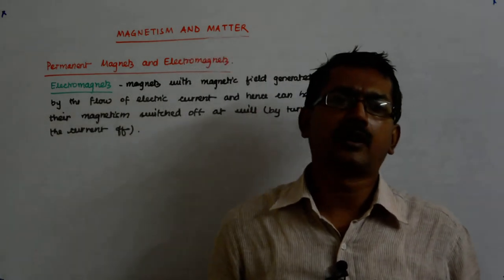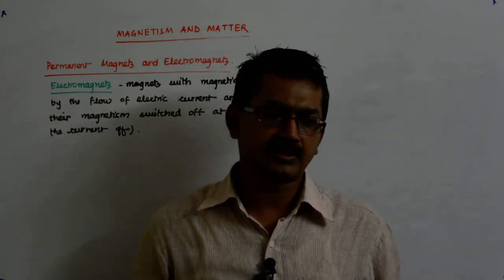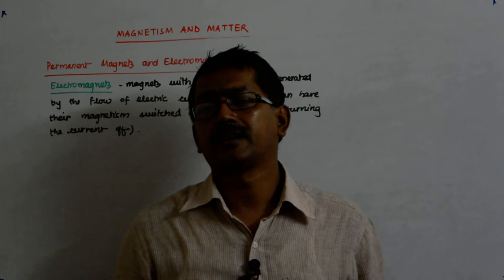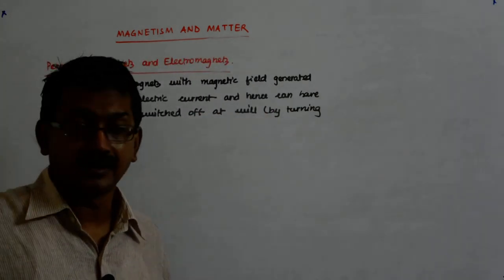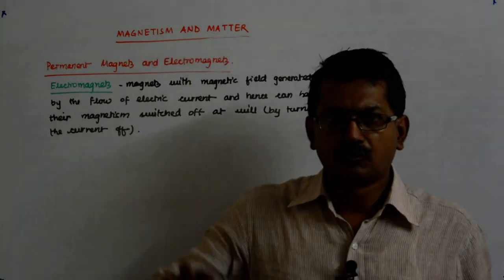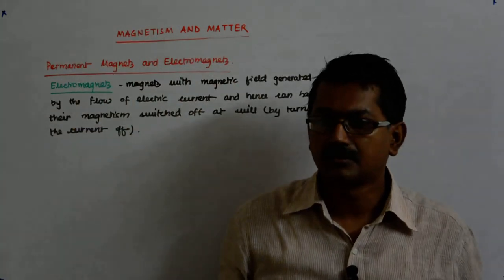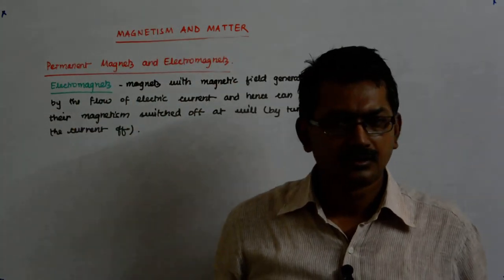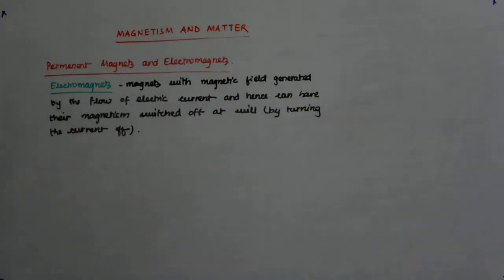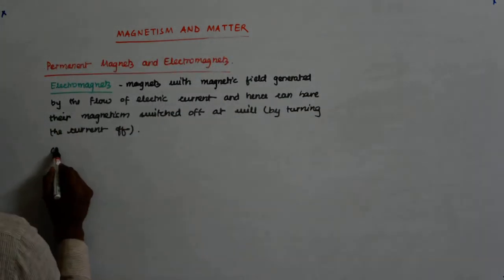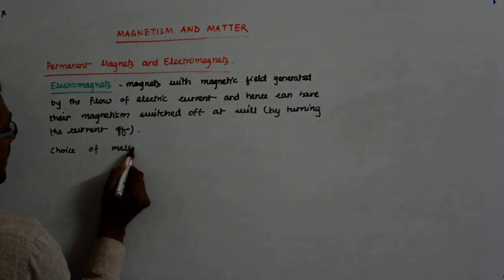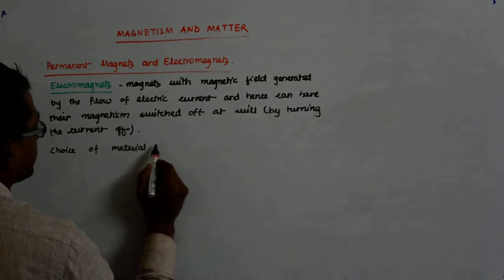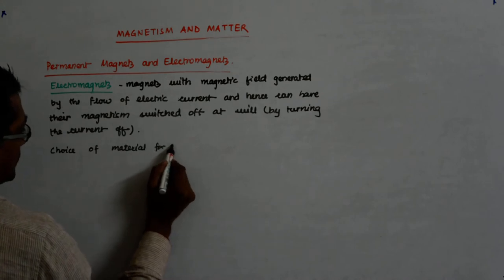Now what kind of material do I require? Do I require a high retentivity material? No, I require a kind of zero retentivity material, otherwise it will become a permanent magnet and whatever is stuck there will remain stuck. I do not want that to happen. So immediately you will understand choice of material for electromagnets: low retentivity, low coercivity, high permeability.